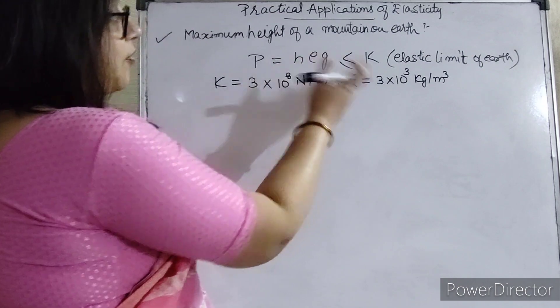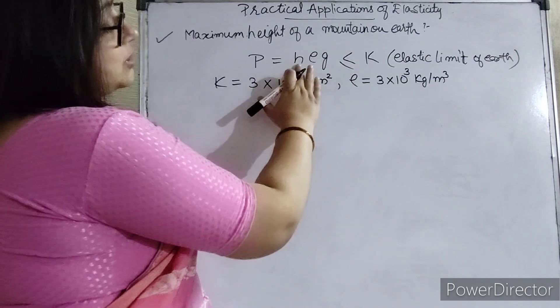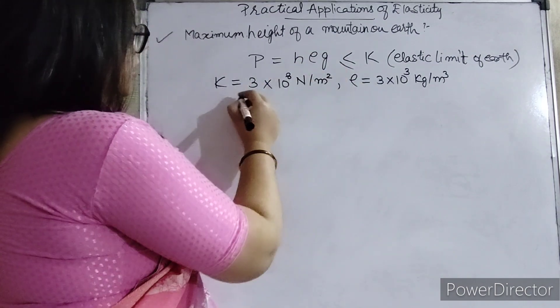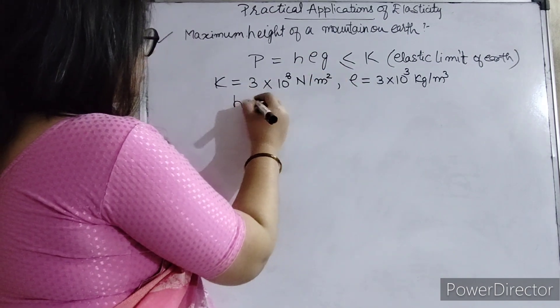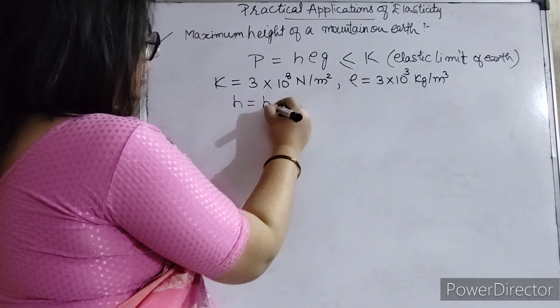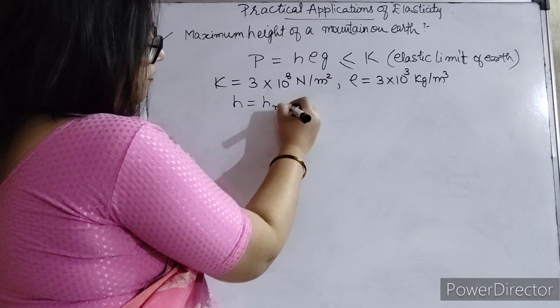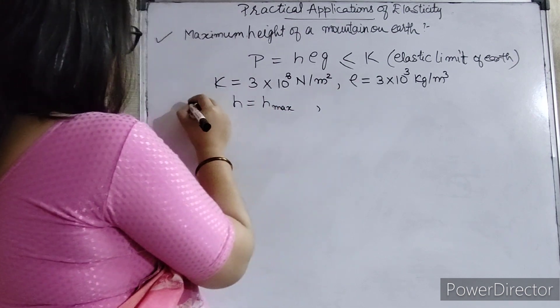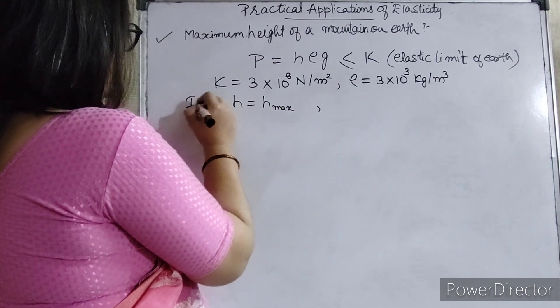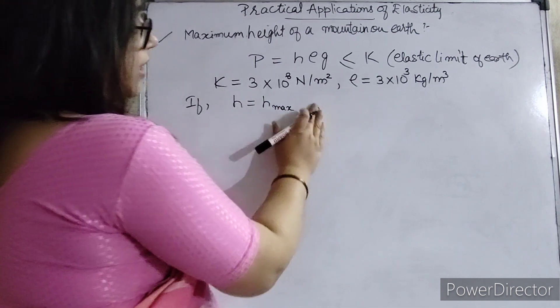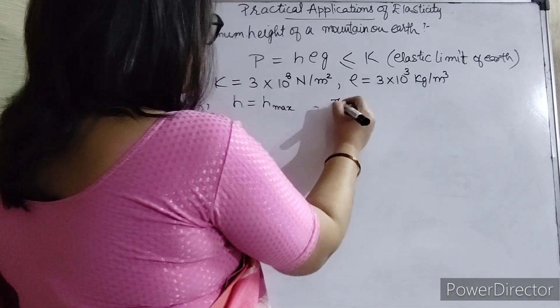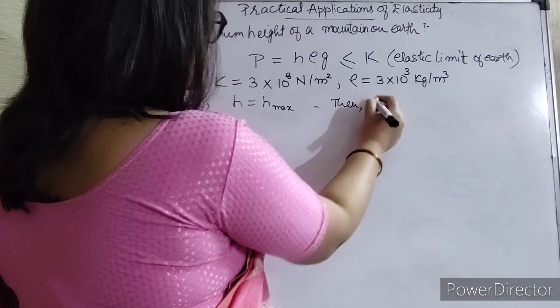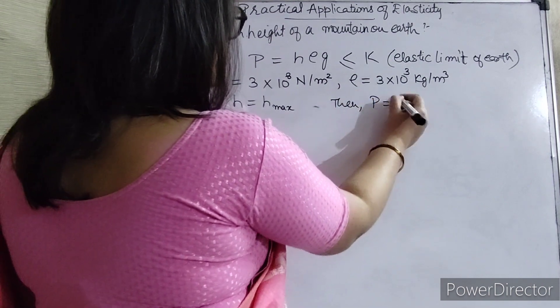So now we will find it. When h is equal to h maximum, then the pressure t is equal to k, the elastic limit.